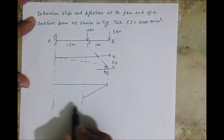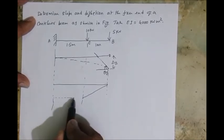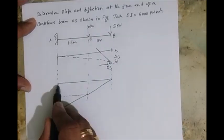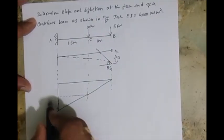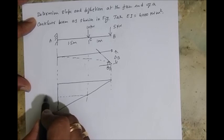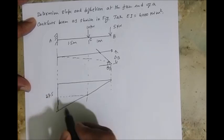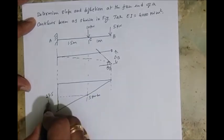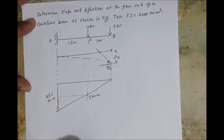So let me draw a line here. So this is what linearly increases. So the total here is 27.5 kilonewton. This is 5 kilonewton meter, this is 27.5 kilonewton meter. So this is what is the bending moment diagram.